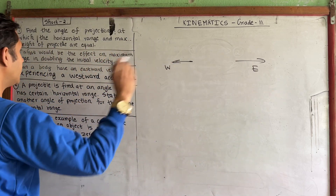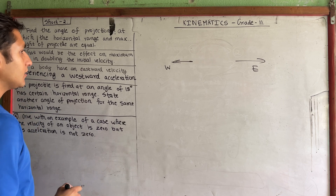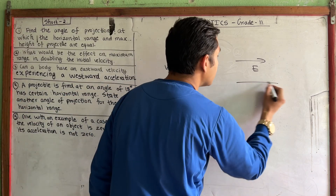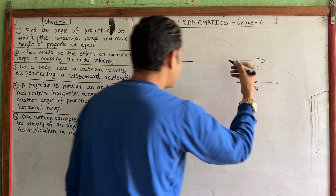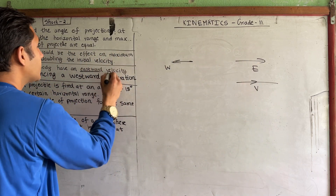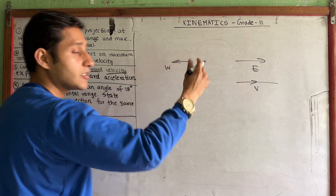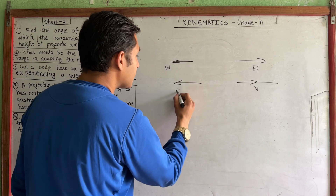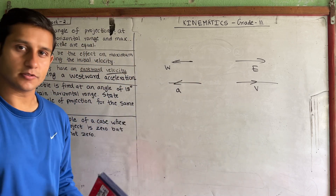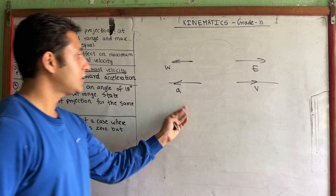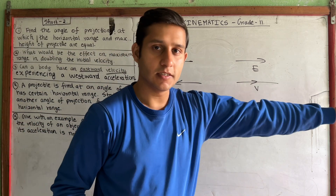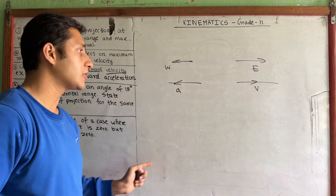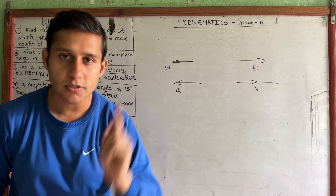The velocity is eastward and the acceleration is westward — in the opposite direction. Is this possible? Yes, it is possible. Acceleration and velocity can be in opposite directions.